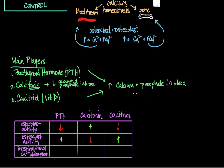Now for intestinal and renal calcium absorption: knowing that parathyroid hormone leads to an increase in calcium and phosphate in the blood, we would expect it to lead to an increase in the ability of the intestines and kidneys to absorb calcium. Calcitriol has this same effect. Calcitonin, on the other hand, tones down calcium in the blood, so we would expect it to decrease the rate of calcium absorption via the intestines and kidneys.